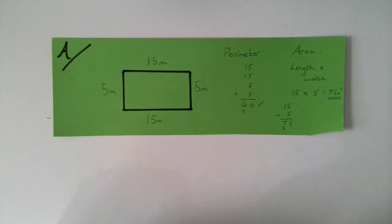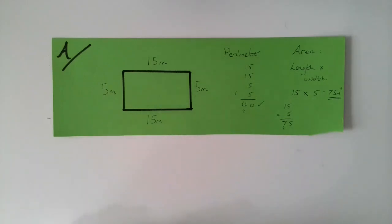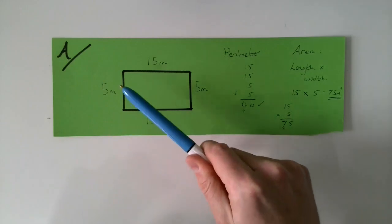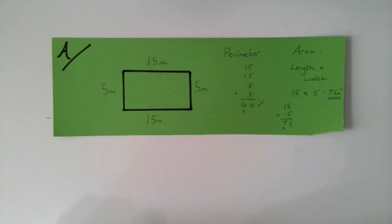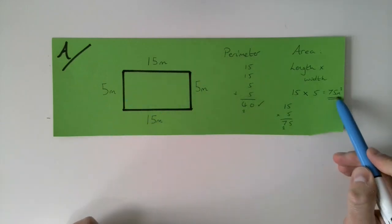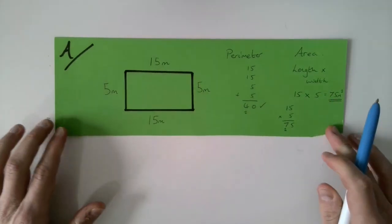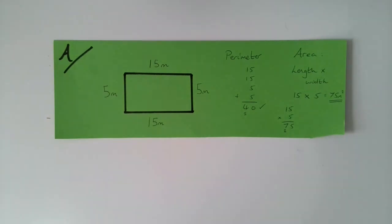What I'd like you to do for problem A is go away and try lots of different sized rectangles to find the one with the greatest area. Once you think you've found the enclosure with the greatest area, make a note of what the area is. Pause the video now, have a go at problem A, and when you're ready to move on restart the video.